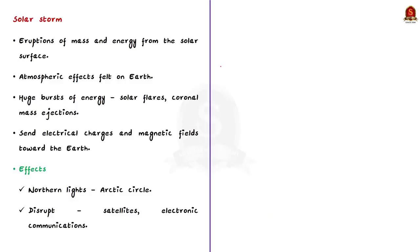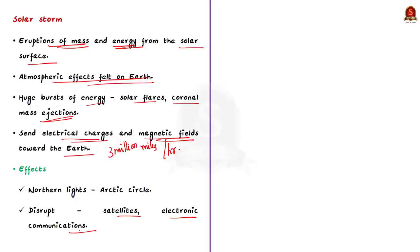First, what are solar storms? Solar storms are a variety of eruptions of mass and energy from the solar surface. A solar storm is a term used for atmospheric effects felt on Earth from certain events that occur on the sun. Solar storms occur when the sun emits huge bursts of energy in the form of solar flares and coronal mass ejections. These phenomenon send a stream of electrical charges and magnetic fields towards the Earth at the speed of 3 million miles per hour. When a solar storm strikes the Earth, it often produces a dazzling northern lights. Sometimes solar storms can also disrupt satellites and various forms of electronic communications.